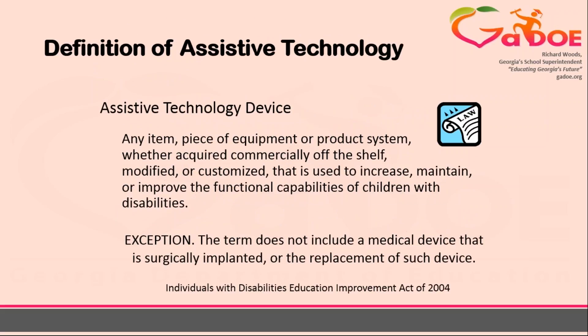Assistive technology is defined as any item that is used to increase, maintain, or improve the functional capabilities of students with disabilities. This can include students receiving special education services as well as students with 504 plans. It is important to understand that assistive technology provides students with access to their curriculum that they may not be able to access through any other means.